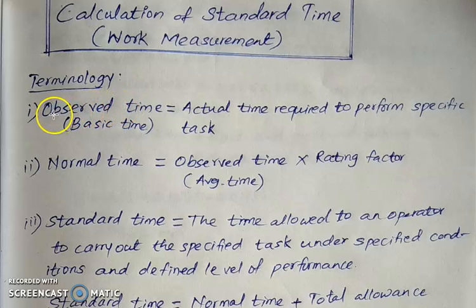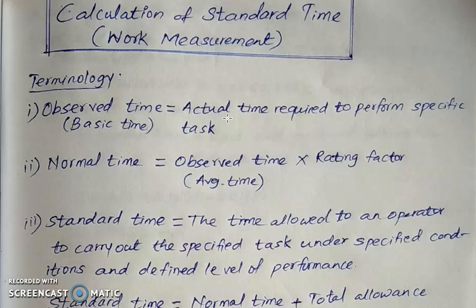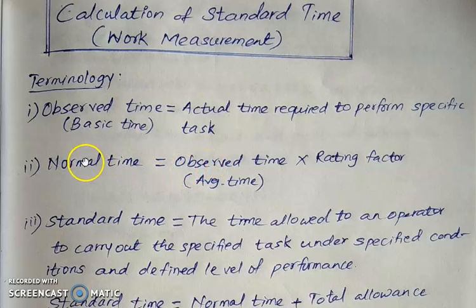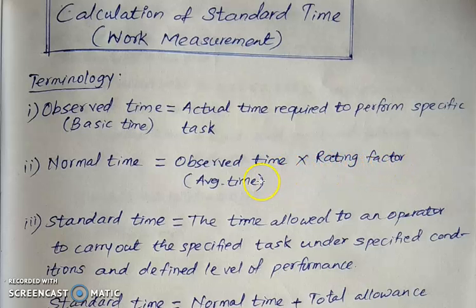The first term is observed time. Observed time is the actual time required to perform any specific task, that is, to carry out any work element — the time required to complete that element. Next is normal time, also called basic time. Basic time or normal time is calculated as observed time multiplied by rating factor. In problems, the rating factor is usually given for each work element.